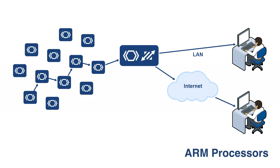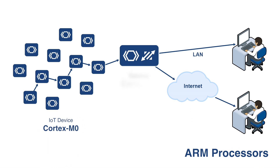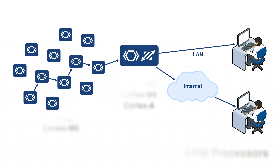So which MCU makes a good starting point? For an ARM processor in the IoT device, the Cortex-M0 is perfect. For gateways, the ARM Cortex-M3, M4, or Cortex-A are all good choices because of their greater processing capabilities.